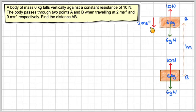We have a velocity here of 2 metres per second and a velocity here of 9 metres per second, and what we've got to calculate is this height here, the distance AB.